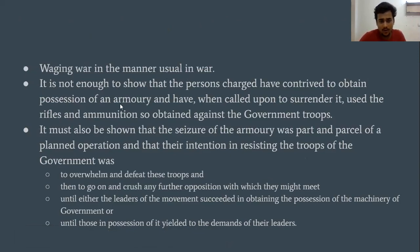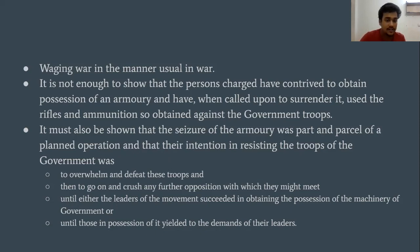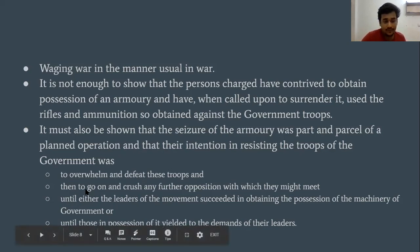Let's take an example. They have arms and ammunition, and when they are called upon to surrender, they use rifles and ammunition against government troops, police force, and CRPF. But this is not said to be waging war. Why? Because their intention is only to kill the troops and government forces — not to overwhelm the troops and take a position of government.